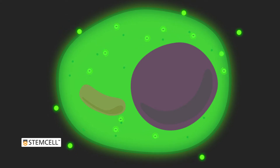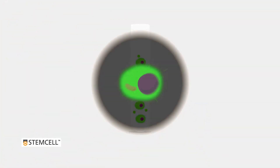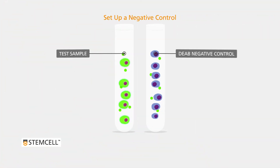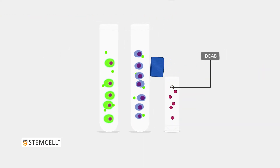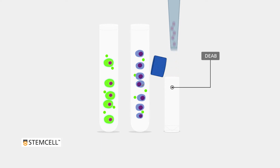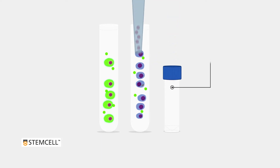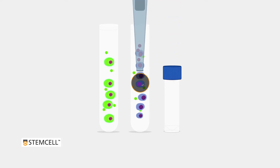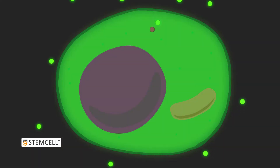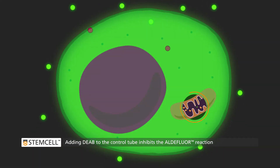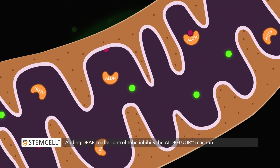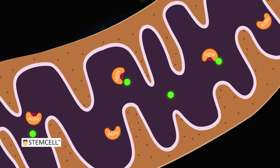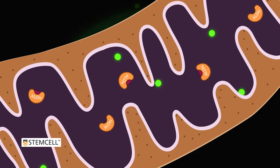When performing the Aldiflor assay, you will need to have a negative control tube in addition to the test sample. DEAB is added to the negative control tube. DEAB inhibits ALDH activity, preventing the Aldiflor reagent from being converted to the Aldiflor product.